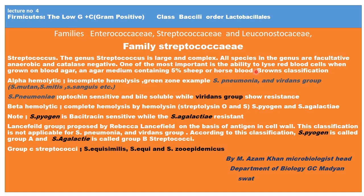For classification purposes, a scientist named Brown classified Streptococcus into various groups based on their growth on blood agar. This is known as Brown's classification. He classified the Streptococcus genera into three groups: alpha hemolytic, beta hemolytic, and gamma hemolytic.